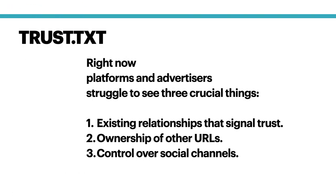And there are a couple of problems with that. The platforms and the advertisers struggle to see three crucial things — you can see the list here. Number one, the existing relationships that signal trust. If there's a publisher that belongs to an association and both of them have been around for dozens, if not a hundred years, that relationship is a great signal of trust, but it's essentially invisible to the platforms right now. Also, the ownership of other URLs — platforms and advertisers don't really know who owns what. You can figure it out as a person, but as a mechanized system there's not a way to do that. And then also control over social channels. This is important — a lot of scammers and foreign governments trying to undermine democracy are trying to create social channels, Twitter accounts and YouTube accounts and that sort of thing, that take the name of a reputable publisher and use it to try to boost their own signal. And it turns out it's false. But the platforms don't have any way to know that a particular Twitter account is not actually controlled by the media property that it claims to be controlled by.